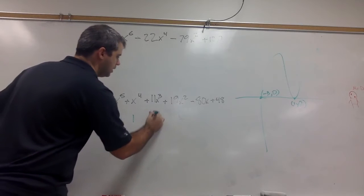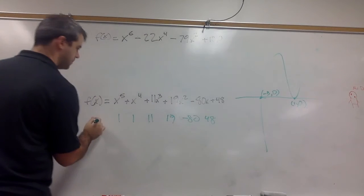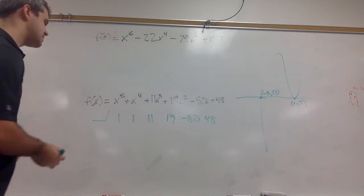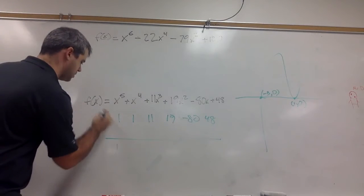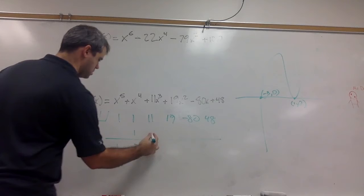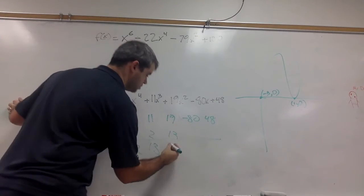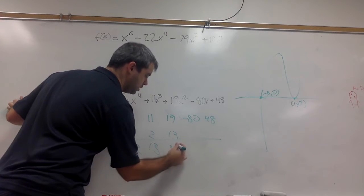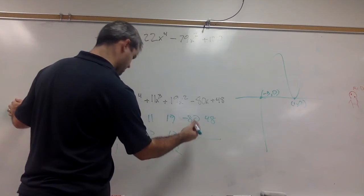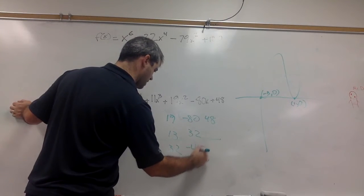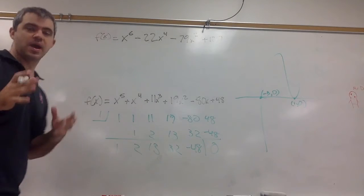So we've got 1, 1, 11, 19, negative 80, and 48. Let's see if we can take out the one first. Math should be pretty easy on that one. So 1, 2, 2, 15, 13, 20, 32. This should be 48. We have 48 and zero. Hooray!